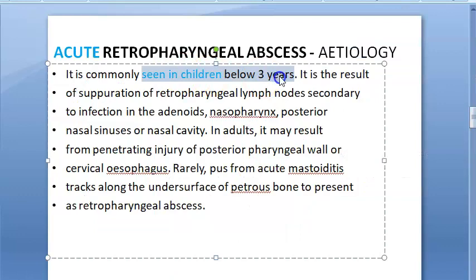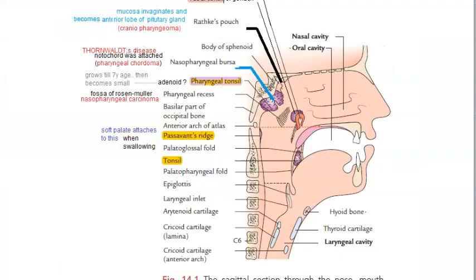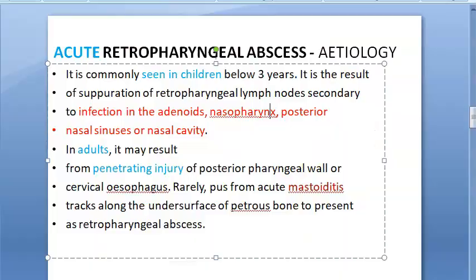Acute retropharyngeal abscess is seen in children below three years of age. It results from suppuration of retropharyngeal lymph nodes secondary to infection of the adenoids, nasopharynx, posterior nasal sinuses, or nasal cavity. Infection of these structures affects the retropharyngeal lymph nodes, leading to retropharyngeal space abscess.